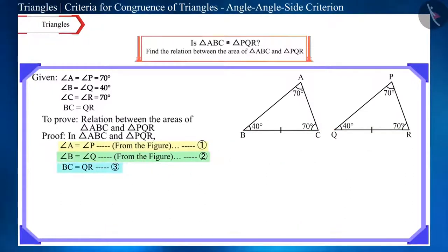Therefore, by looking at equations 1, 2 and 3, we can say that both these triangles are congruent according to the angle-angle side criterion or AAS congruence rule.